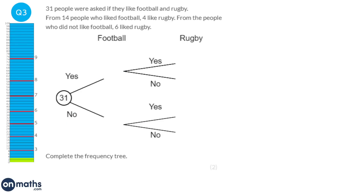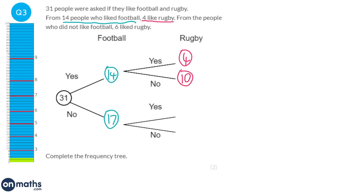We're told that 14 people liked football, so we fill in 14 here. We started with 31, so if 14 liked football then 17 must have not liked it. Carrying on, 4 of those liked rugby, so of the 14 who liked football, 4 liked rugby and 10 did not. For those 17 who didn't like football, 6 liked rugby, which means 11 did not like rugby.